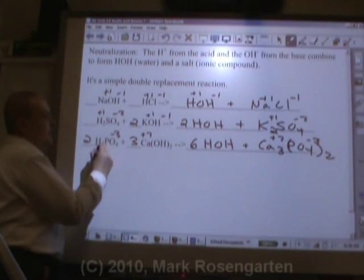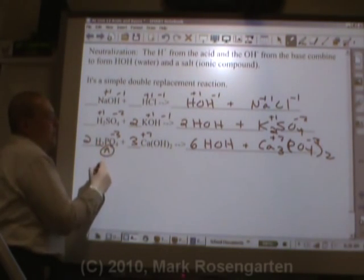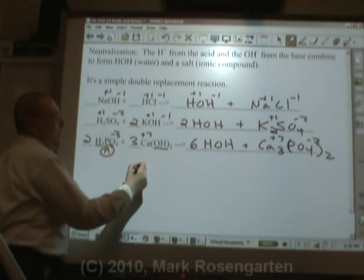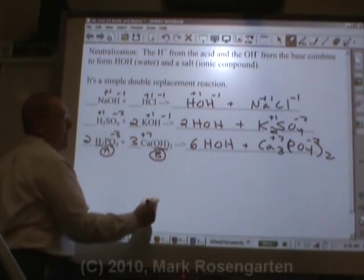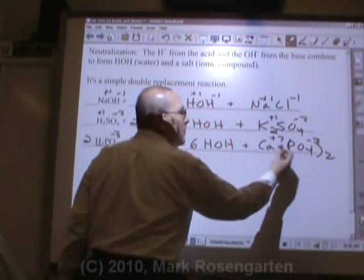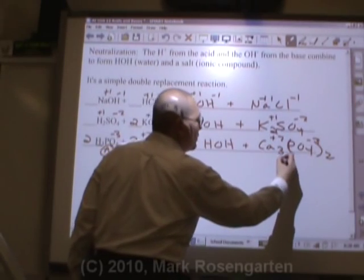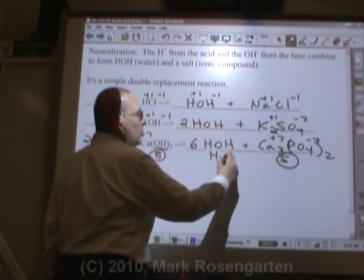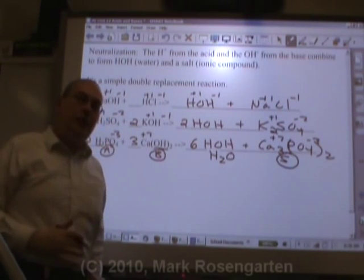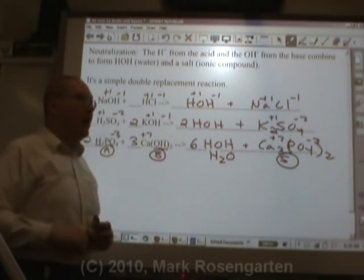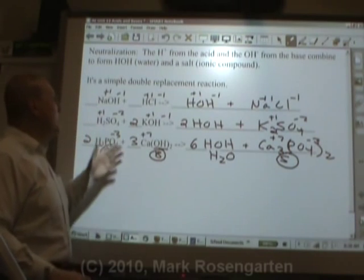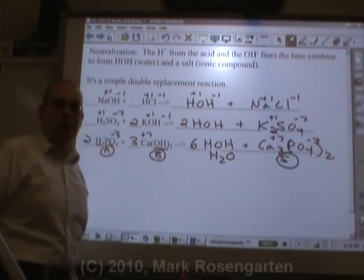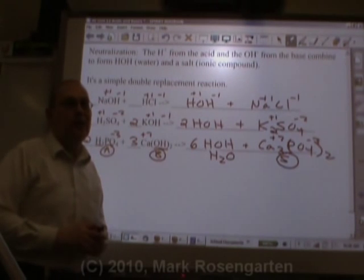The formula that contains the H plus is the acid. The formula that contains the OH minus, that's the base. And the ionic compound you form from this neutralization is called the salt. You can write water as H2O if you like. It's just that when completing these reactions, it's actually easier to write water as HOH. That way you can see very clearly how things are balancing out in the neutralization reaction.